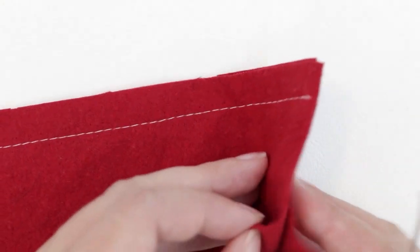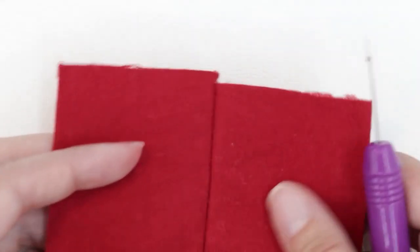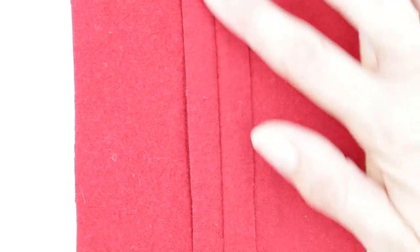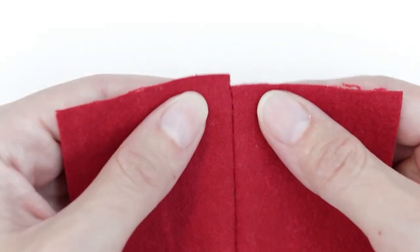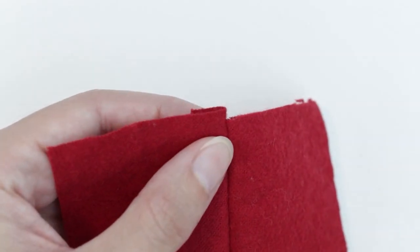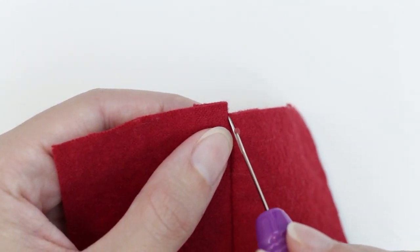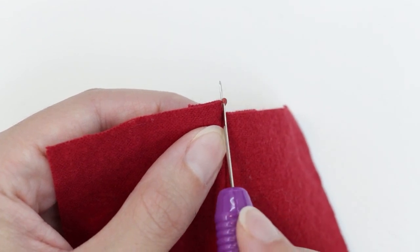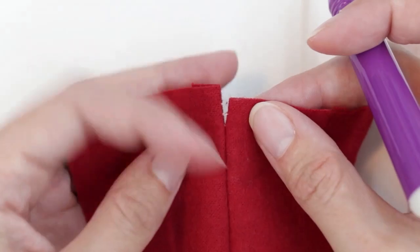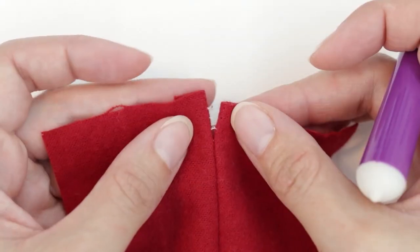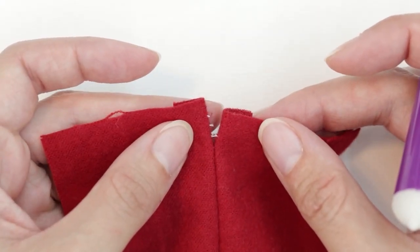You can open up your fabric. And if you can, press open your seam lines just with your fingers. And then look from the right side and slide your seam ripper between the layers. Make sure you only cut threads and not the fabric. And then gently pull your fabric apart.